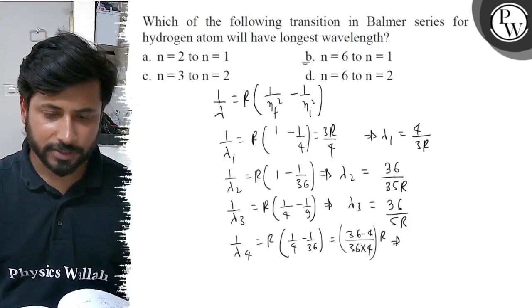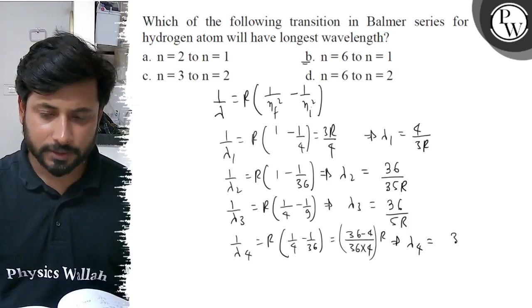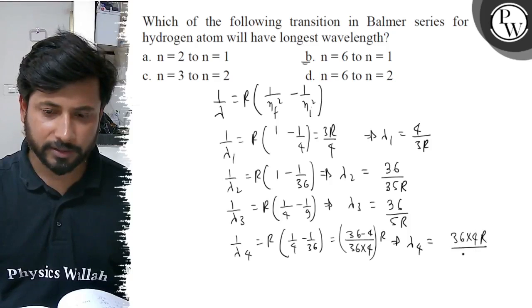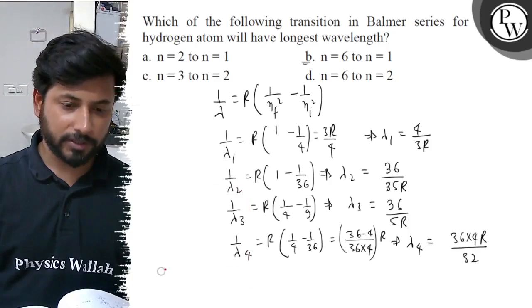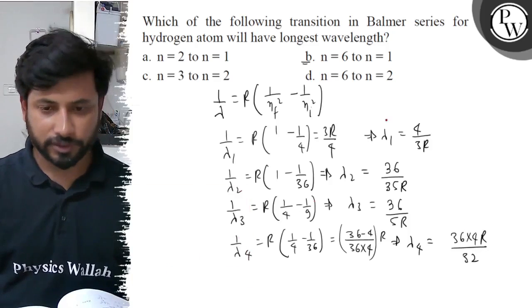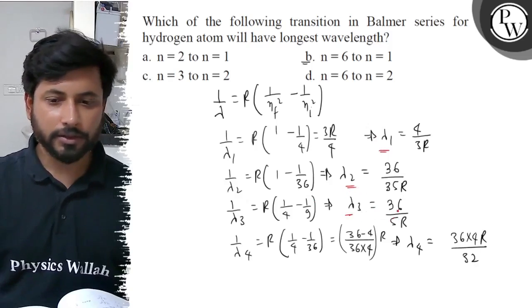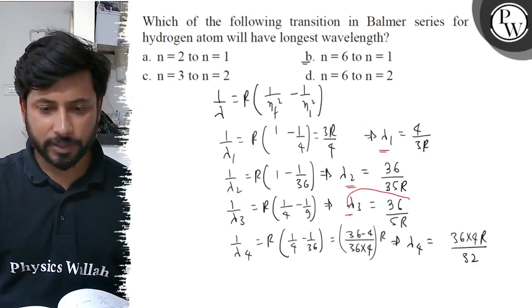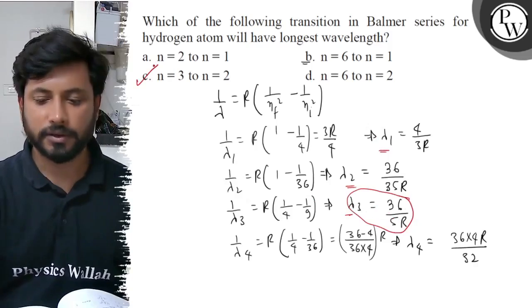Now comparing λ₁, λ₂, λ₃, and λ₄, we need to determine which one is maximum. Clearly, λ₃ is the maximum. So Option C is the correct answer.